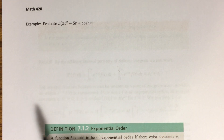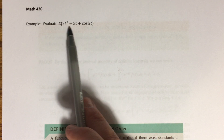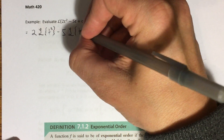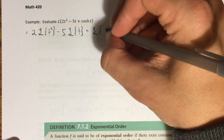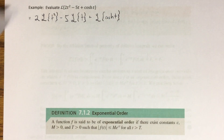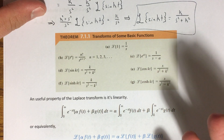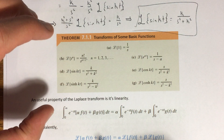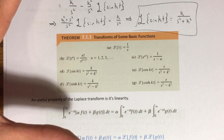To illustrate, consider L{2t² - 5t + cosh(t)}. Using linearity, this equals 2·L{t²} minus 5·L{t} plus L{cosh(t)}. Typically when learning Laplace transforms you're not expected to memorize the whole table — you use it for reference.